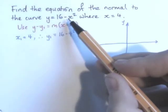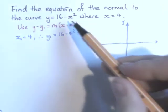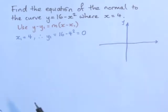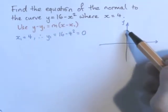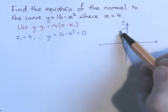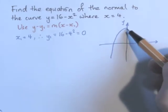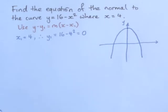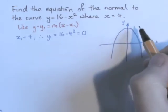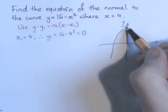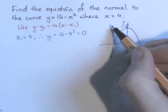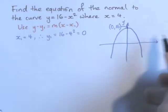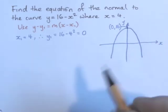So this is a quadratic with minus x squared, which means it's an n-shaped quadratic, and the 16 is the y-intercept. So it's going to look something like that, where this point is 0, 16.